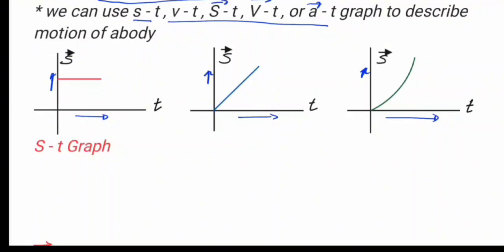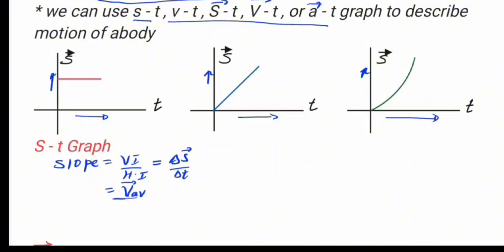We are going to use the slope formula. The slope is mathematically described as vertical increase over horizontal increase. The vertical increase is the change in the vertical axis quantity, and the horizontal increase is the change in time. So the change in displacement over change in time gives us the average velocity. If we use distance, the slope gives us average speed. So the slope of the s-t graph equals velocity.